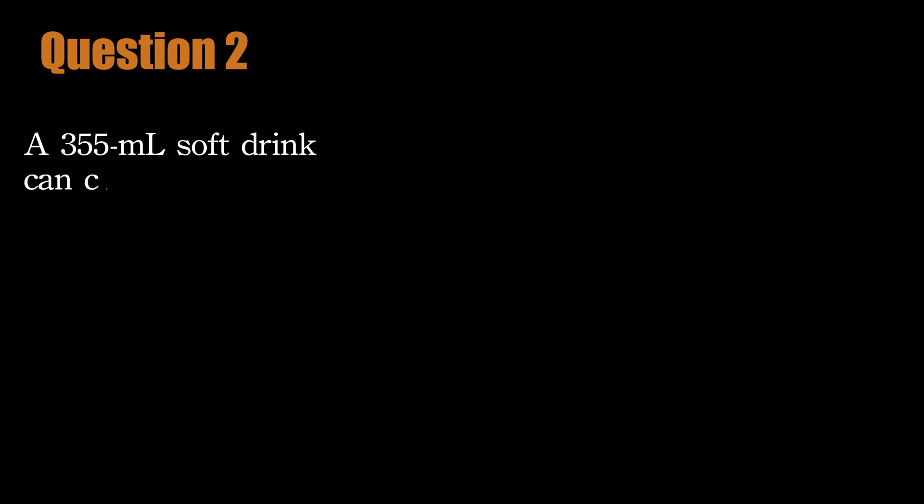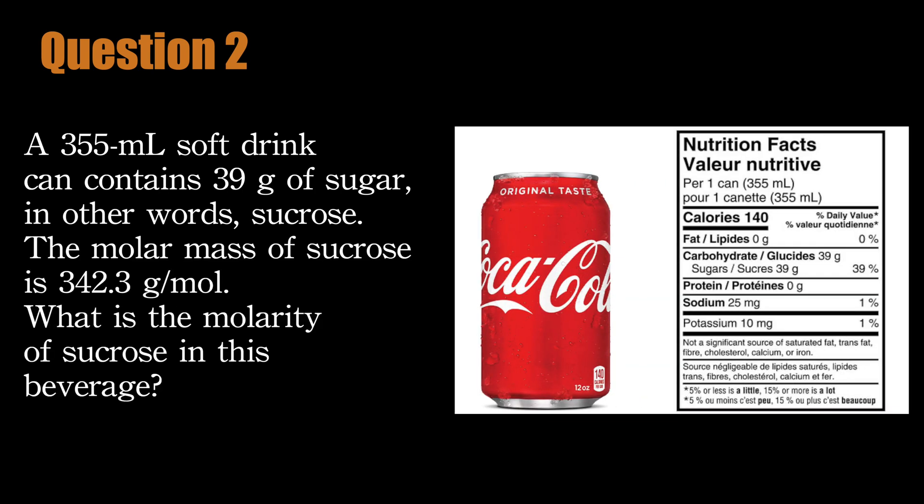Question 2. A 355 ml soft drink can contains 39 grams of sugar, or sucrose. The molar mass of sucrose is 342.3 grams per mole. What is the molarity of sucrose in this beverage?